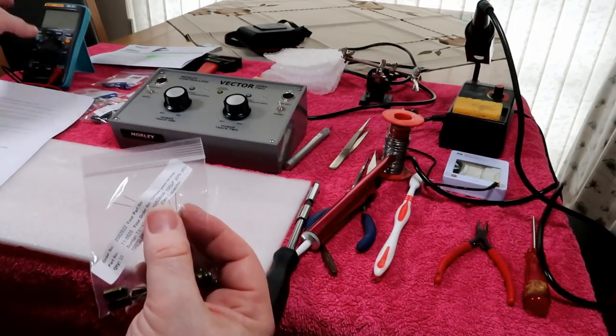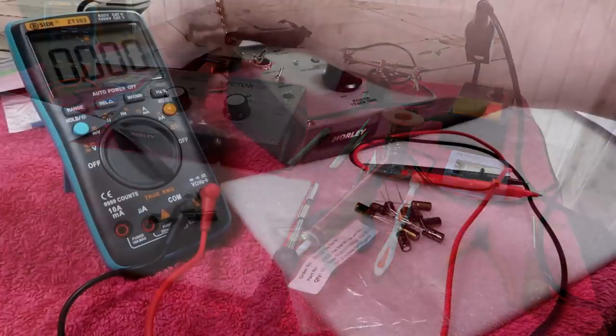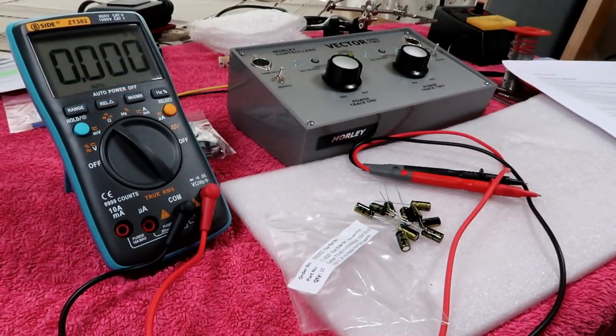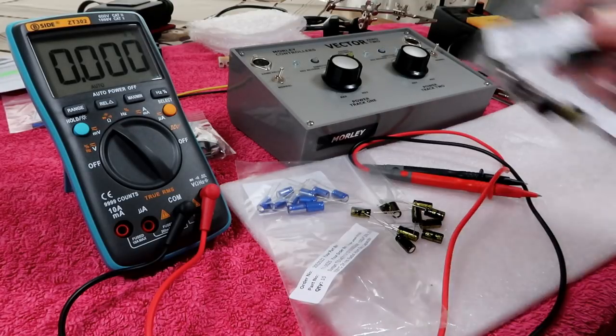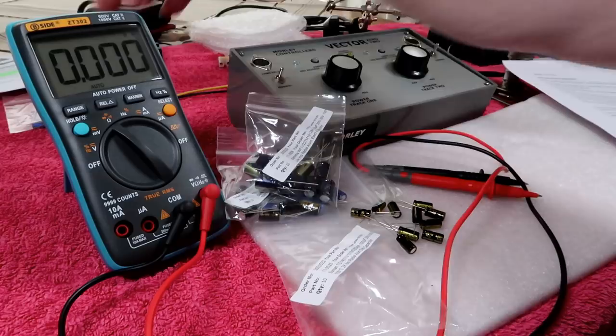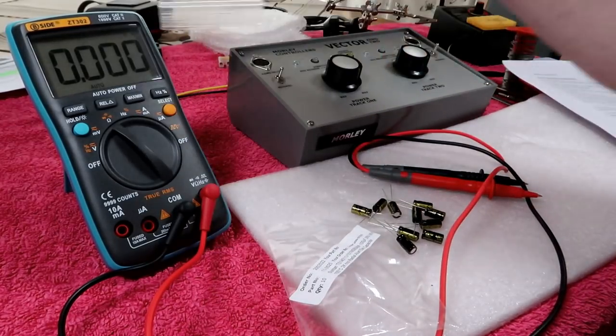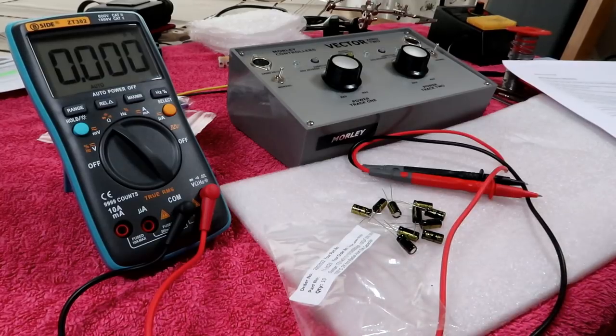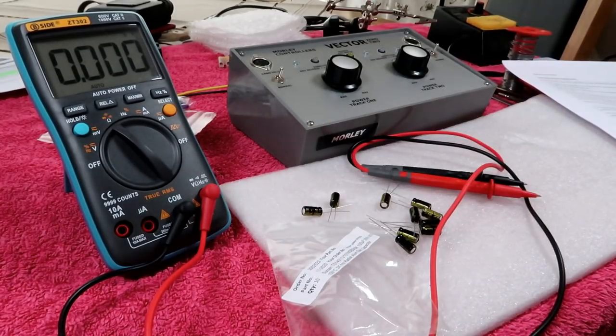And to do that you will need a multimeter that can read capacitance. Now as you can see, I've been experimenting using the oscilloscope with various different types of capacitor or different values to find out what to replace the original 1000 microfarads with.